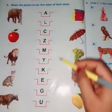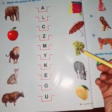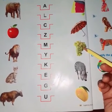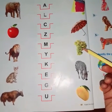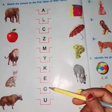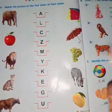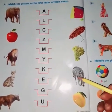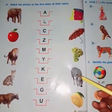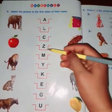U for umbrella. And identify that picture — grapes. First letter of grapes is G. Where is letter G? Here. So you have to match it. G for grapes. And what is this? Zebra. First letter of zebra is Z. Z is here. So you have to match it.